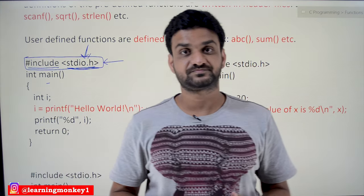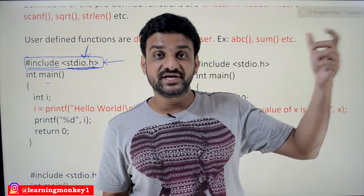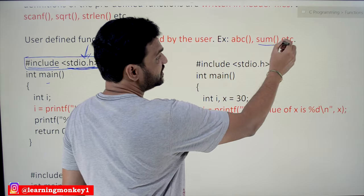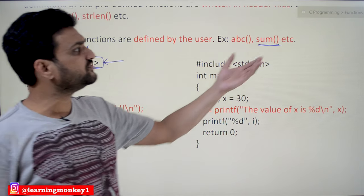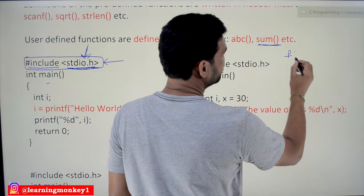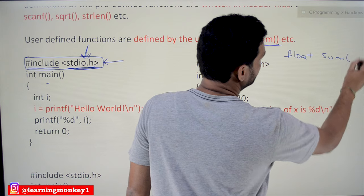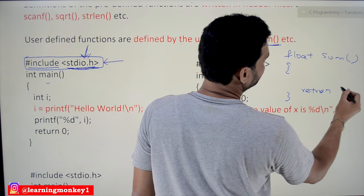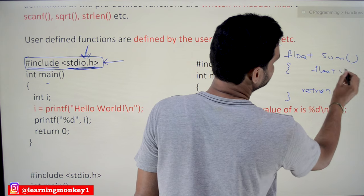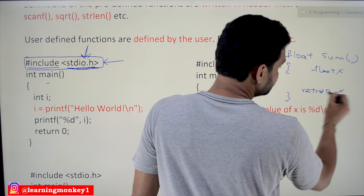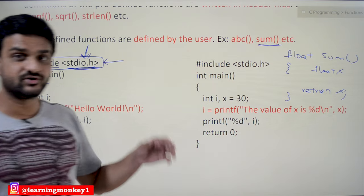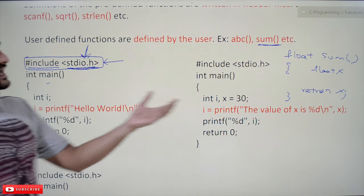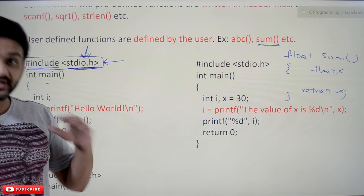We have also seen that every function will have a return value. return 0 — int main means the main function is going to return an integer. If some function uses float, we define it as float and at the end give a return statement returning some float value. For example, if float X is there and we want to return X, this function is going to return a floating point value. Similarly, what about printf and scanf — what will they return?